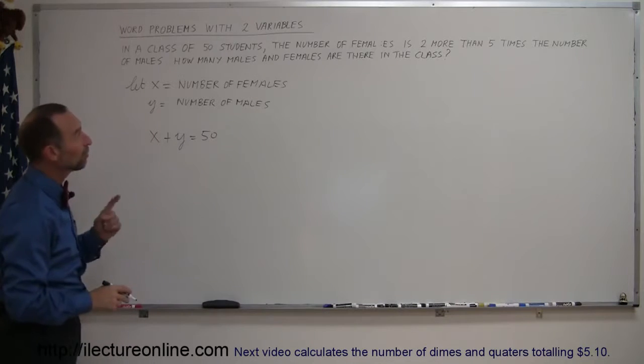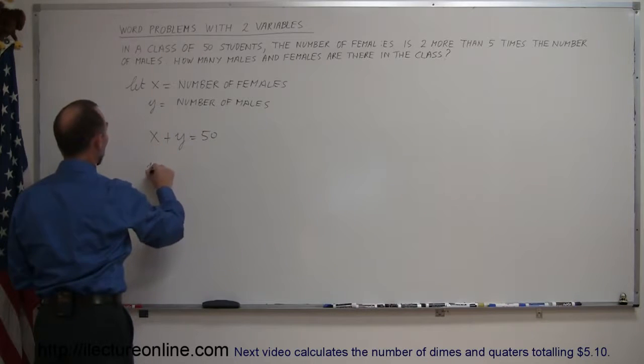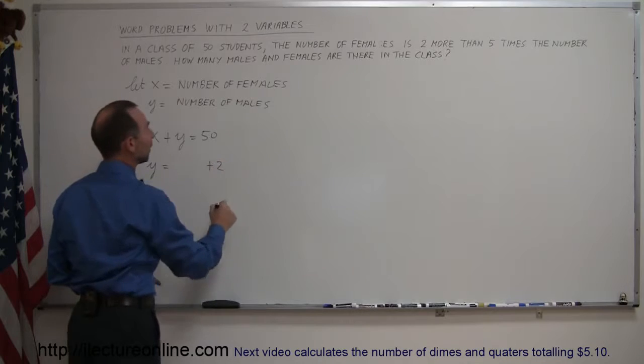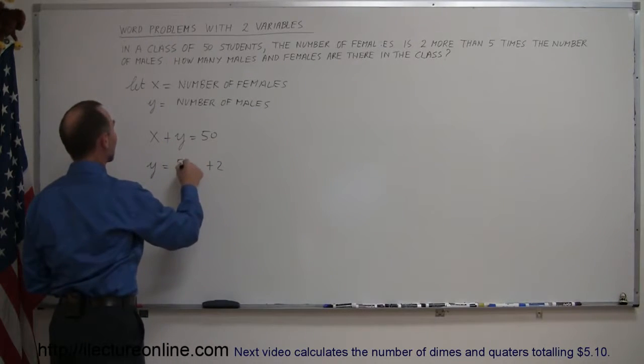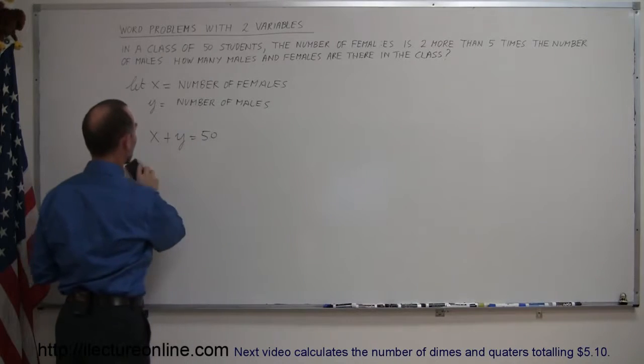And then it says that the number of females, and since the number of females is defined as y, we can then say that y is equal to two more, plus two, than five times the number of males, so five times x. Oh wait a minute. I think I just got that wrong.